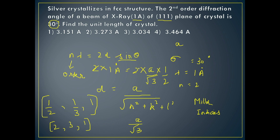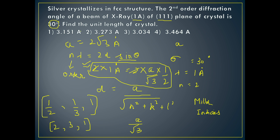Since sine 30 equals 1/2, the 2s cancel, leaving a/√3 = 1 Angstrom. Solving this equation, the value of a comes out to be 2√3 Angstroms. Since root 3 equals 1.732, this gives 2 × 1.732 = 3.464 Angstroms. So option number 4 is the correct answer. Don't forget to write the units — they can be important.